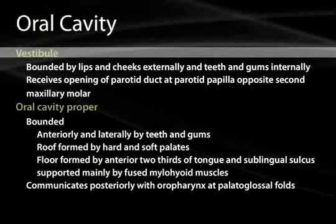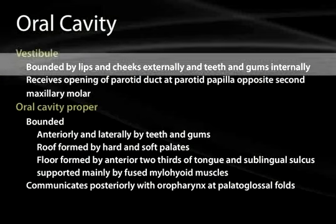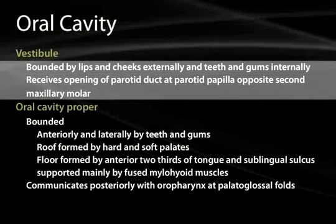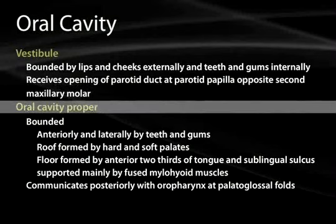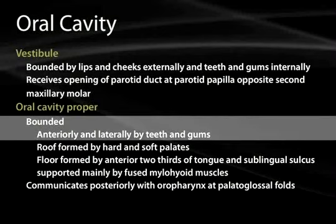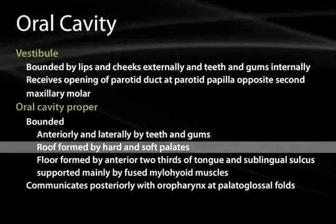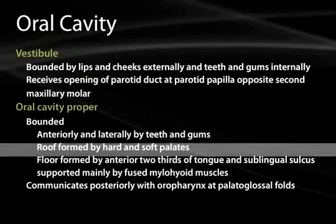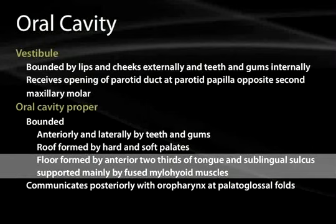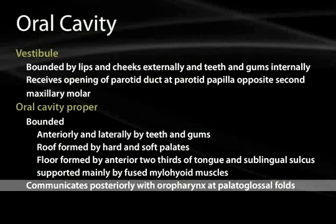What areas do we want to be concerned with in the oral cavity? There's the vestibule, which is going to be between the teeth and the lips, and that will involve the cheek area. There's the oral cavity proper, which is bounded anteriorly by the teeth and the gums. The roof will be the hard and soft palate, and the floor will be the anterior two-thirds of the tongue and the perilingual spaces on either side. This communicates posteriorly with the oropharynx by passing through the palatoglossal folds.